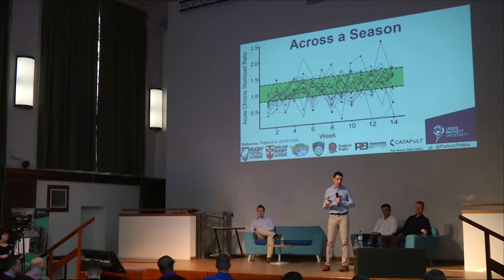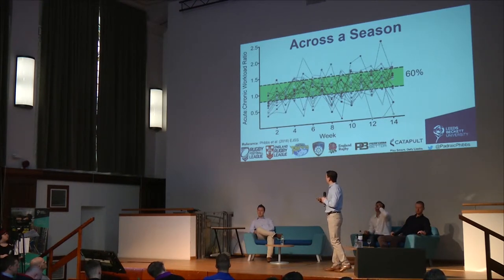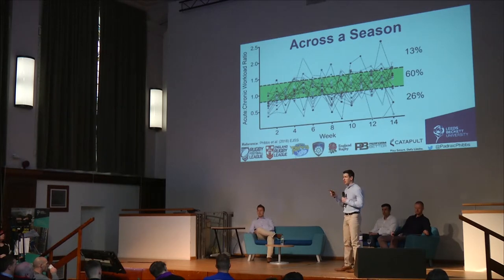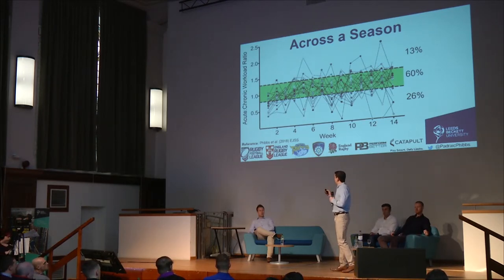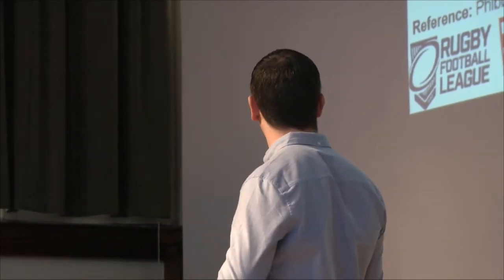We looked at 20 academy players over a 14-week school season and found that only 60% of the time did they remain within the safe zone of 0.8 to 1.3. Twenty-six percent of the time they fell below this threshold, and 13% they went above it — so they actually spend double the time being under-prepared than over it. Working in adolescent rugby, we're always seeing worst-case scenarios, but being under-prepared probably leaves them ill-equipped for matches, inhibits their physical development long-term, and makes them more susceptible to injury spikes due to bigger acute chronic workload ratios in the future.